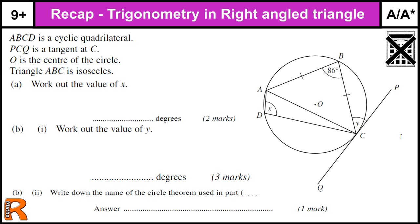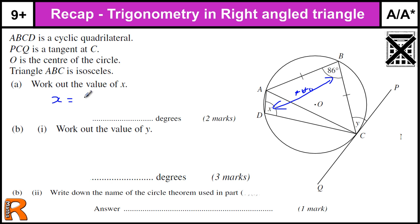Okay, this question we've got a cyclic quadrilateral, an isosceles triangle, and a tangent — work out the value of X. So X is opposite this angle in the cyclic quadrilateral, so they add up to 180, so X is going to be 180 minus 86, which is 94.